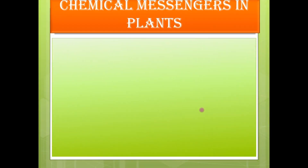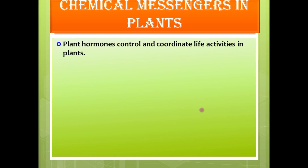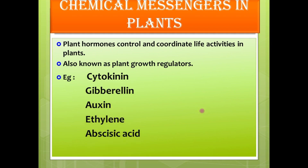The next topic is chemical messengers in plants. Similar to animals, plants also produce a set of chemical messengers called plant hormones for controlling and coordinating life activities. They are also known as plant growth regulators. Some examples are cytokinin, gibberellin, auxin, ethylene, and abscisic acid.